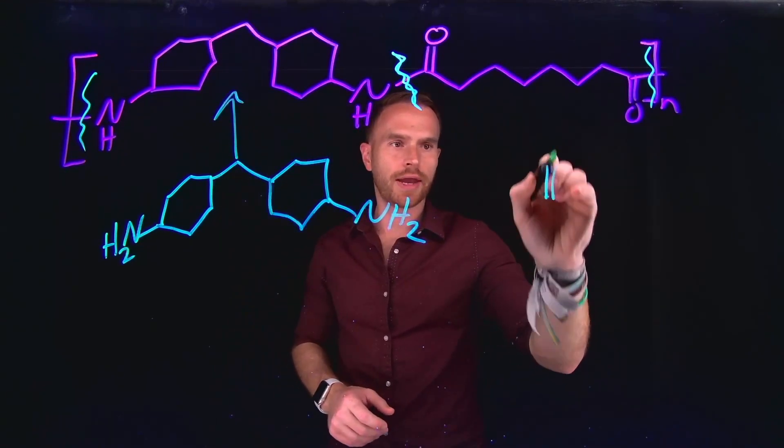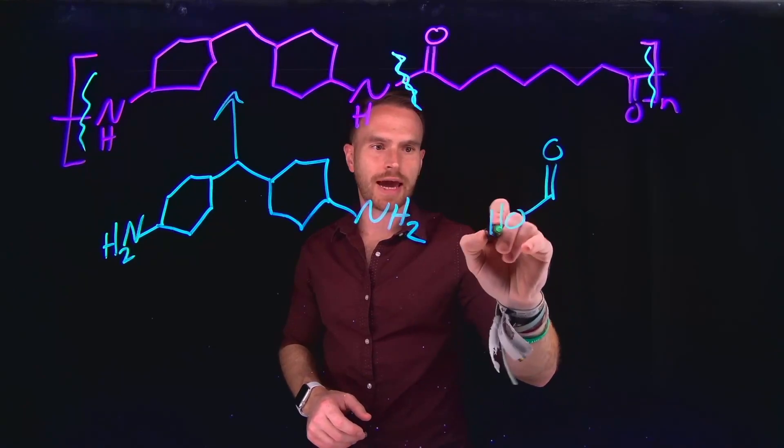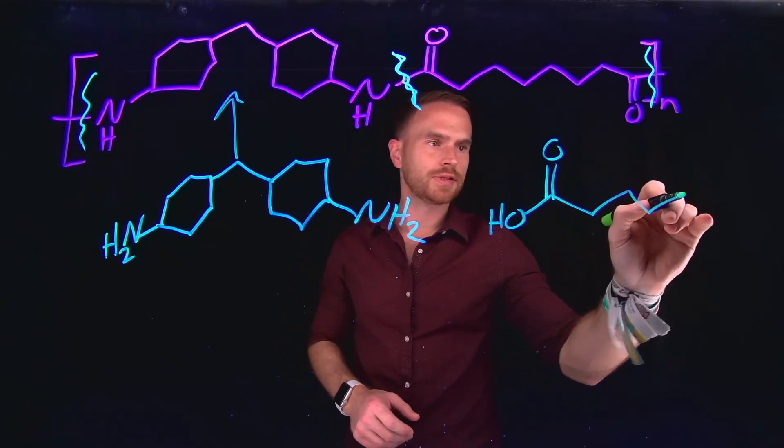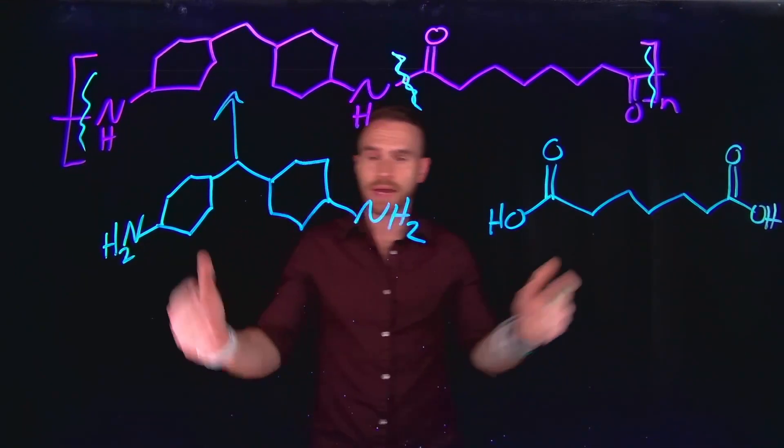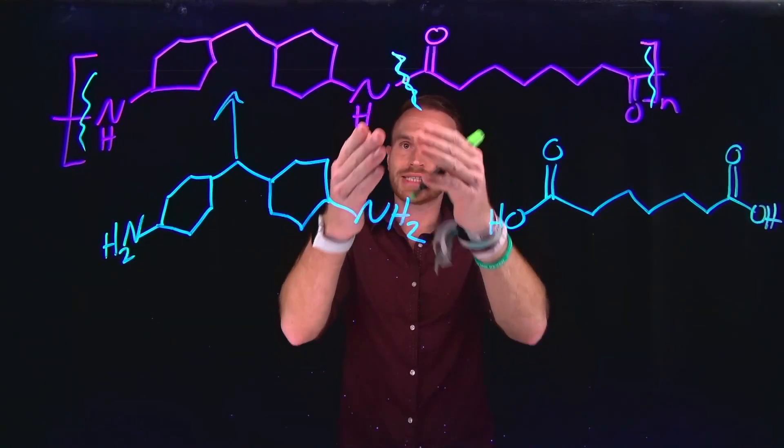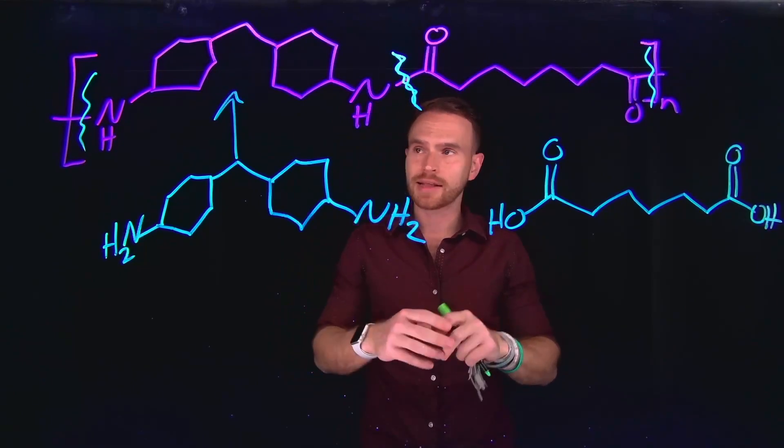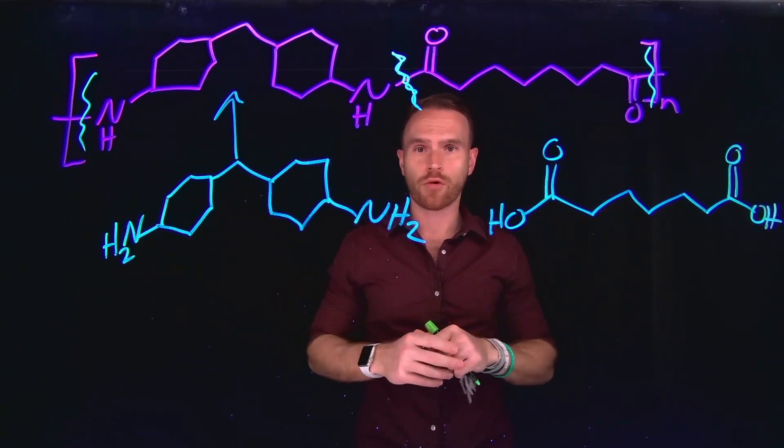And then in addition to that, I know that if I were to have a carboxylic acid on both ends of this chain, then I would also have the other end of my copolymer. And these come together to form this stable amide bond formation that allows us to generate this overall copolymer.